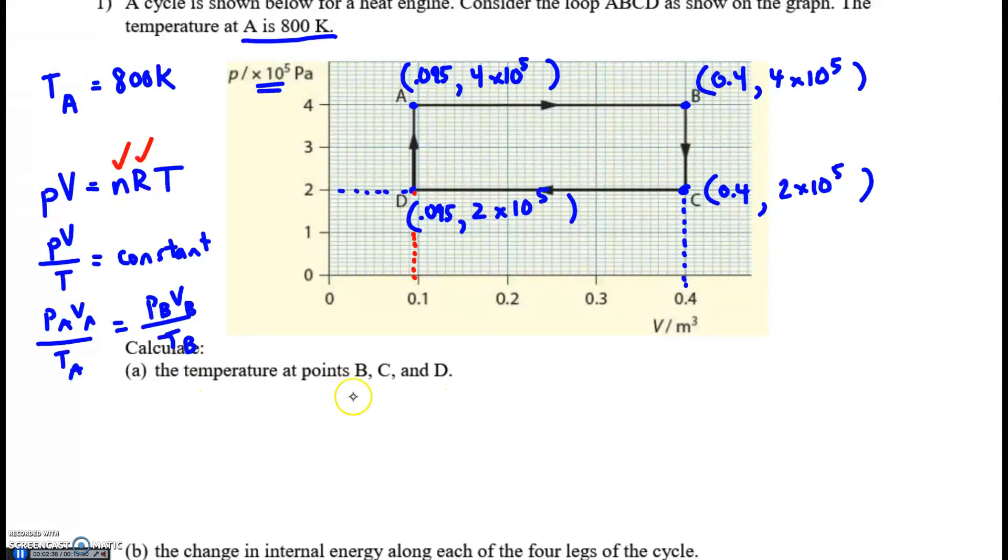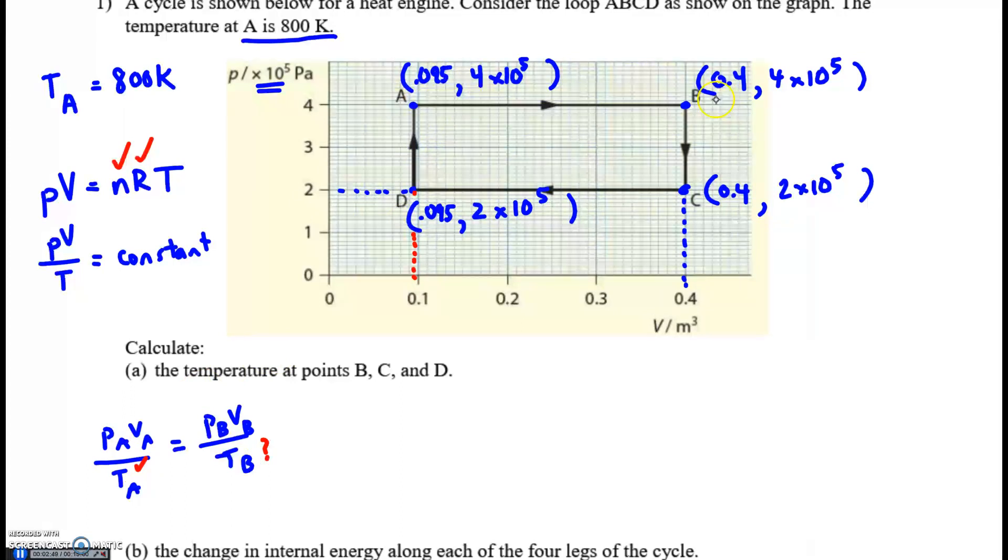To find the temperature at B, I'm going to use exactly this equation. I know the temperature at A, and this is my unknown. From A to B, they have the same pressure, 4 times 10 to the 5th. So when you plug in pressure, it's going to cancel. Then you just calculate the value. The volume at A is 0.095, the volume at B is 0.4.